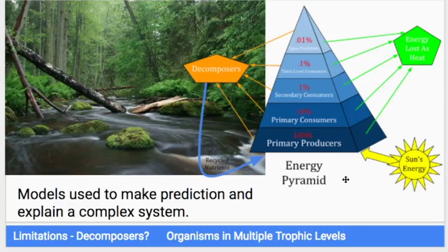What we call this is the 10% rule because on average 10% of the energy of one trophic level gets passed on to the next trophic level. I want you guys to pay attention to models, to the model that is an energy pyramid.